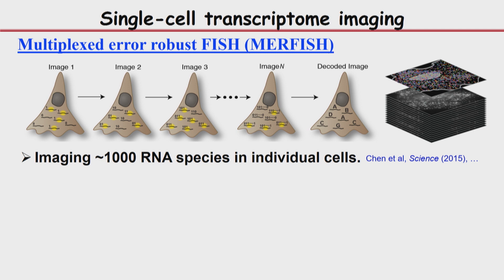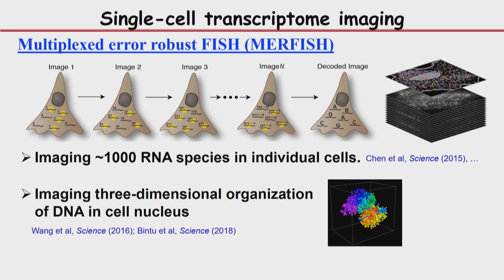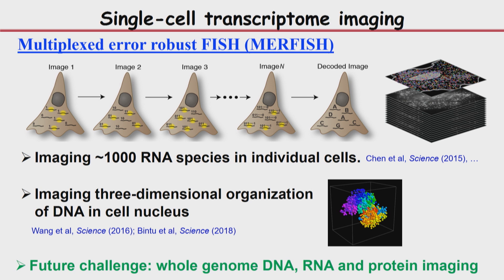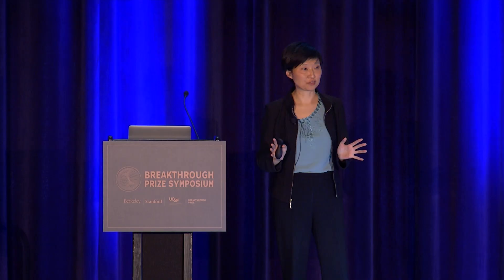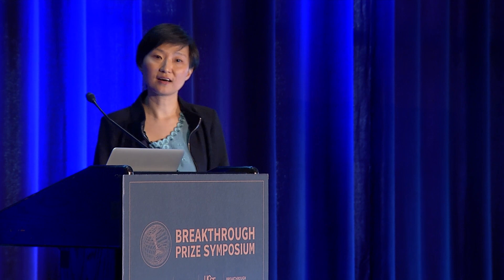We also applied MERFISH to DNA to see the three-dimensional organization of DNA, which is critical for gene expression regulation. Another major future challenge is whole-genome DNA imaging, whole-genome RNA imaging, and also whole-genome protein imaging. Even though RNA gives you the expression profile, many of the functional molecules inside the cell are proteins, and whole-genome protein imaging is harder to do. But there are labs around the world trying that, and we are interested in trying it too.